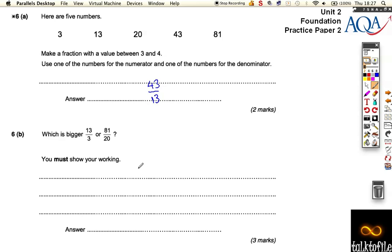One way of doing it is converting the bottom numbers to the same. So if we do 13 over 3 and 81 over 20, the smallest number they both go into is 60. So we have to find out how many times 3 goes into 60, which is 20, and we have to do 20 times 13. 10 times 13 is 130, so 20 times is 260.